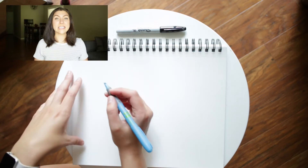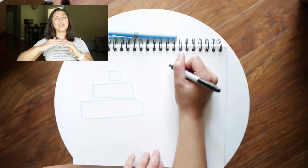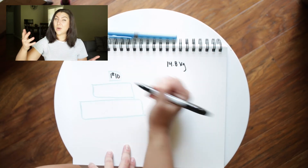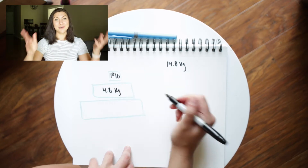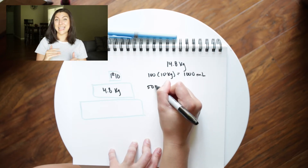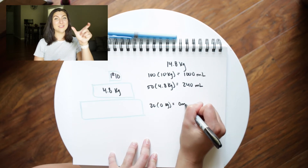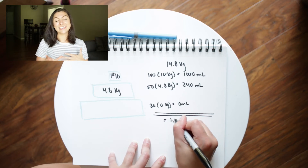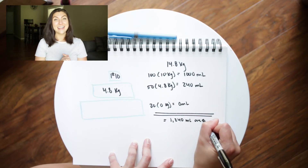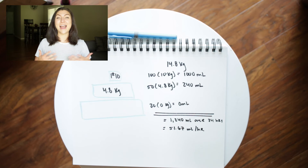Let's do one more example — a patient right in between the first and second tier. An example weight would be 14.8 kilograms. We pour it into the fountain: we have our first 10 kilograms accounted for, and since the weight is more than 10 kilograms, we're going to have some spilling over into the second tier. That means 4.8 extra kilograms fill up the second tier. You take the first tier's number and add it to the second tier's calculated number — that's your 24-hour total — then divide by 24 to get your hourly rate.